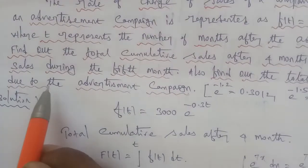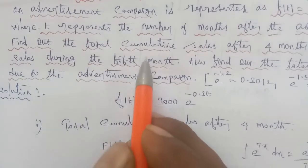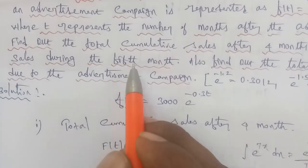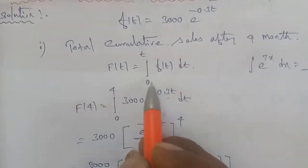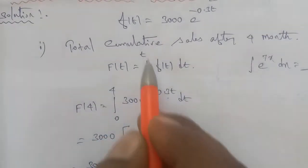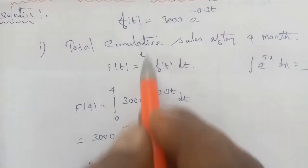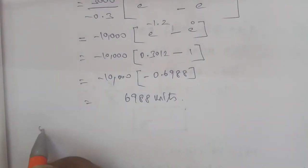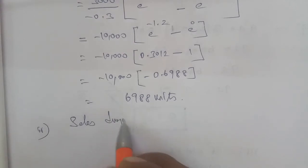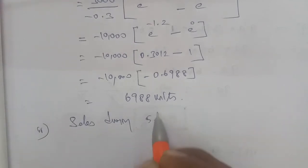For the second sub-question: sales during the 5th month. So we need to apply the integral from 4 to 5.